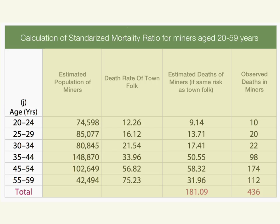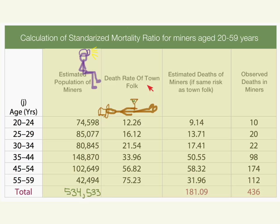So let's go through this. In the first column is our estimated population of the miners, so we can see how many miners we have — the total number was about 500,000. In this column we have the deaths of the miners. And in another column, we have the death rate of the town folk — for the town folk, we do have age-specific mortality rates. I should note that these rates are per 100,000.